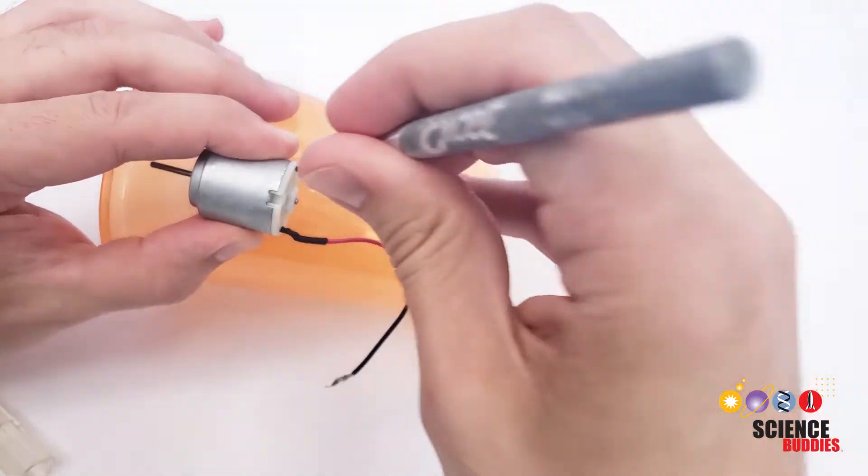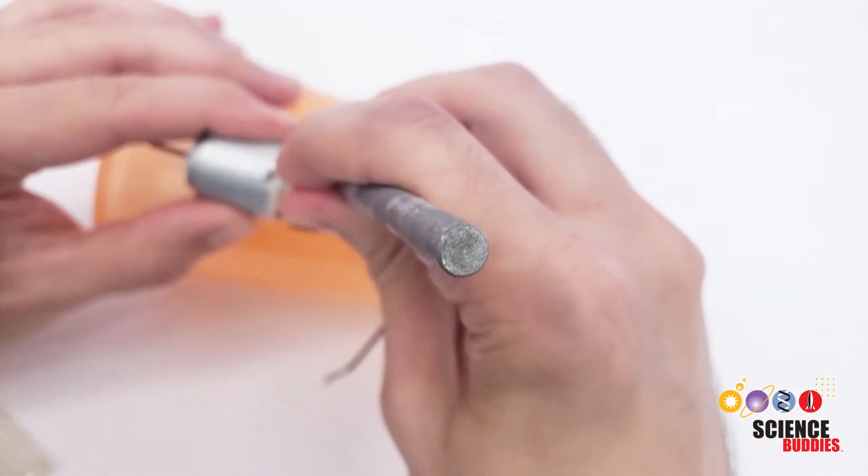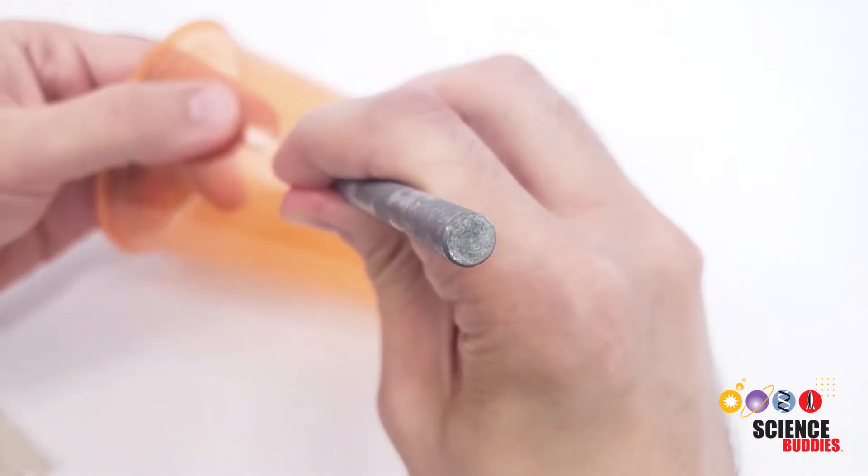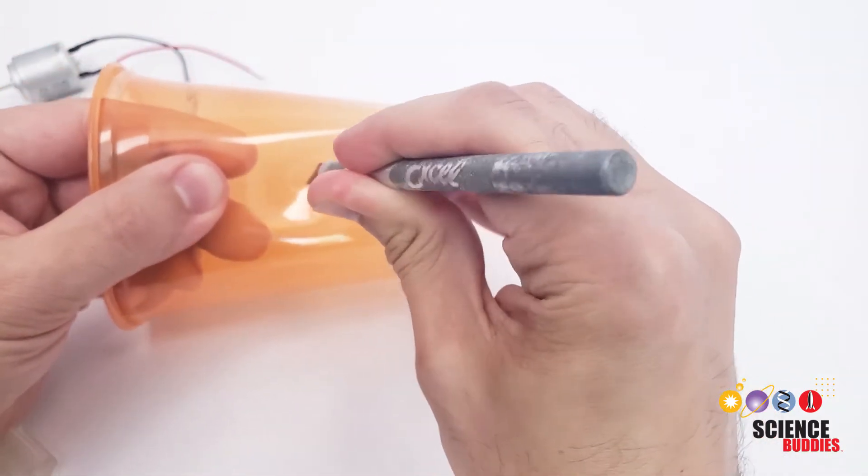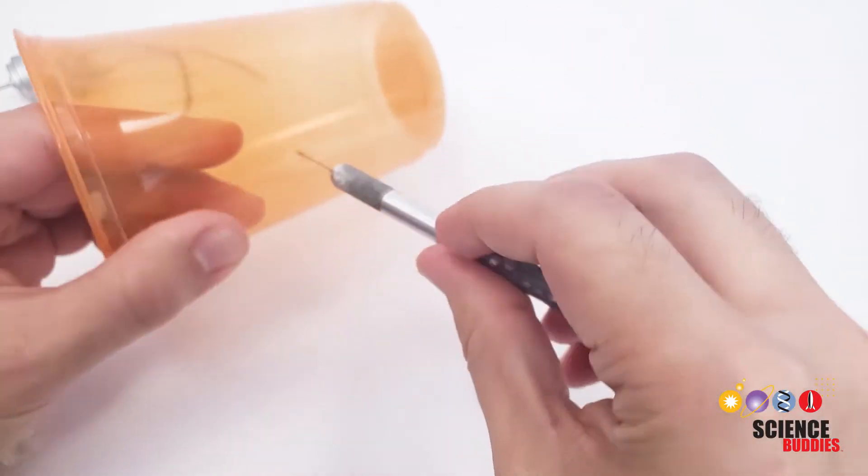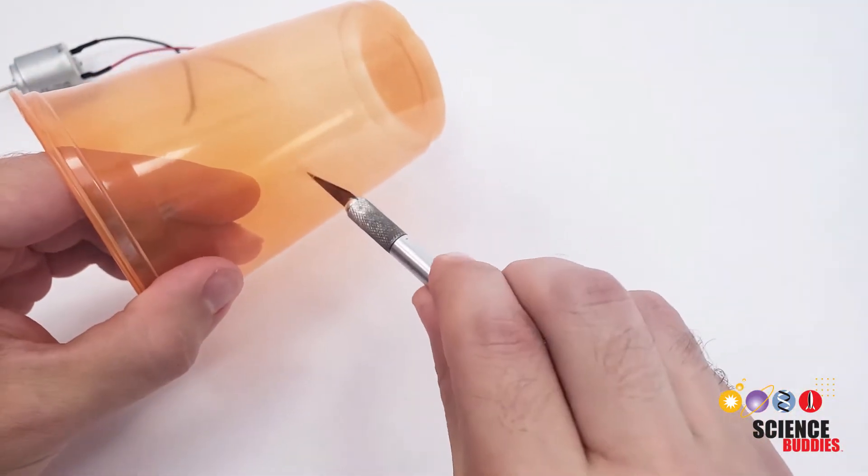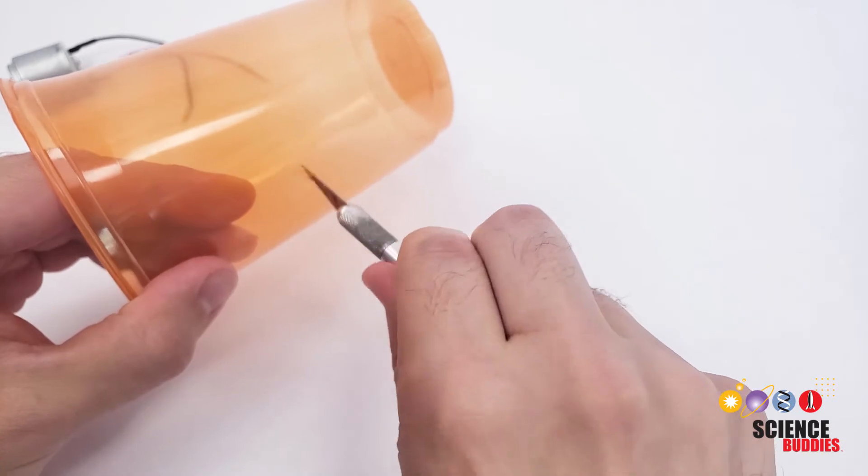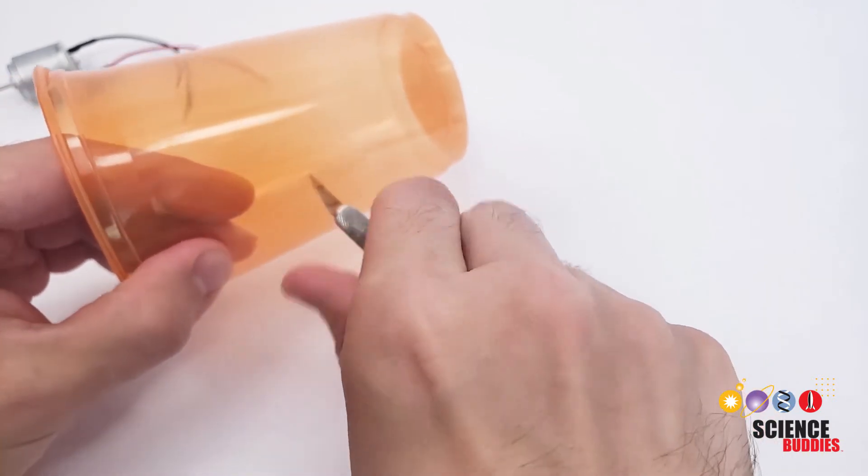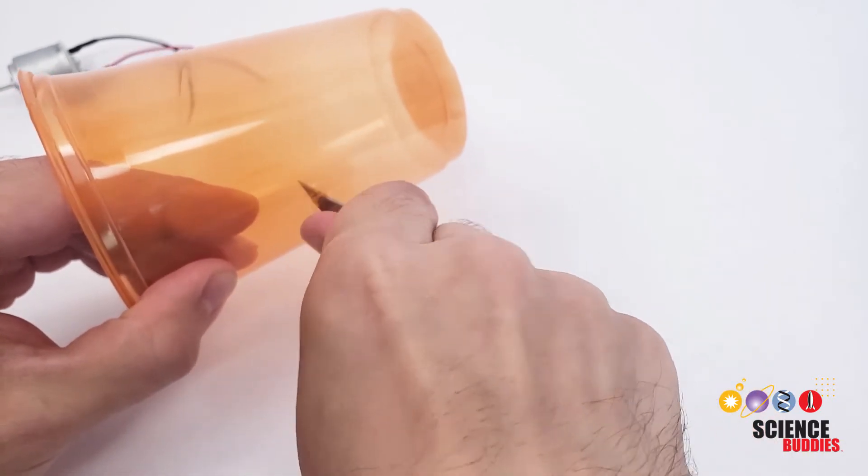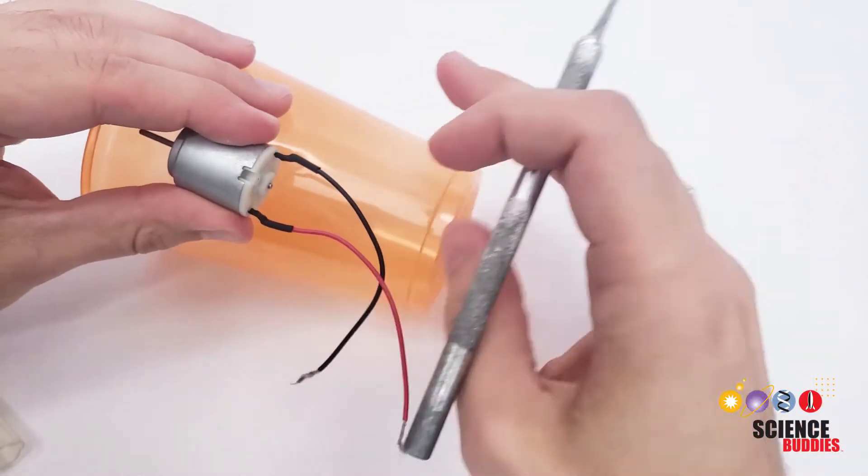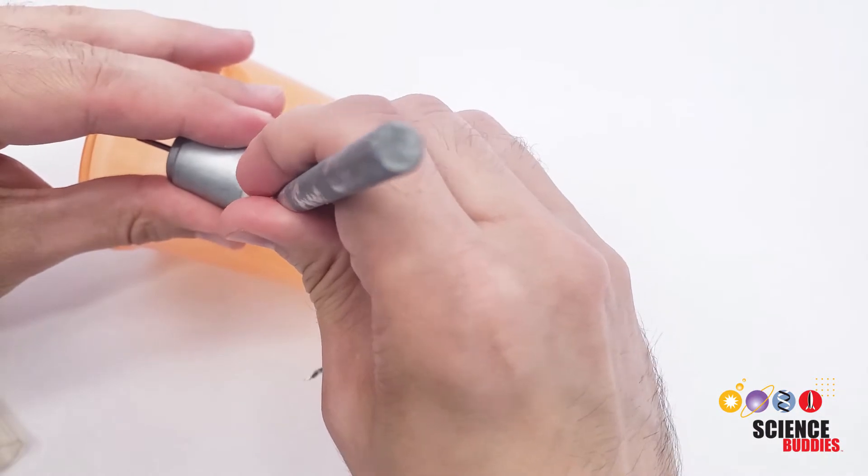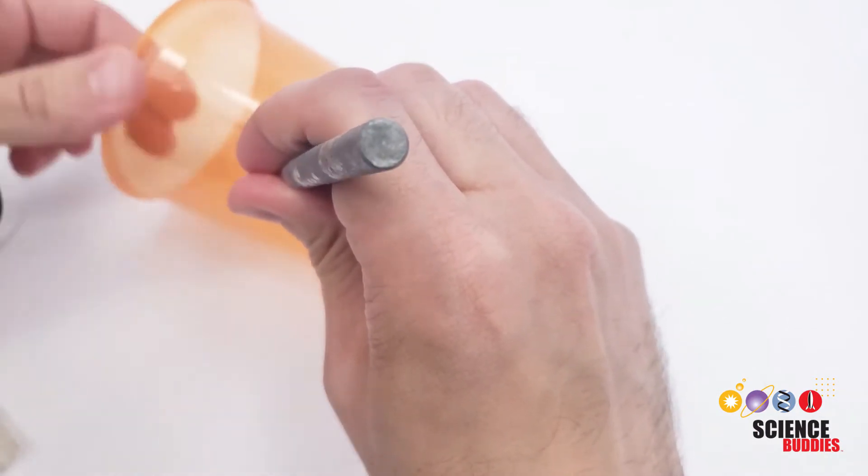So I'm going to use the motor as a visual indicator here. Carefully poke a hole through the cup. Do not put your hands behind where you're poking that blade through, because you don't want to poke yourself in the fingers. And once you've gotten the blade poked through a little bit, you're going to twist it to widen the hole so the wires from the motor will fit through. And then you're going to repeat that again at the correct spacing so the wires from the motor will fit through these two holes.